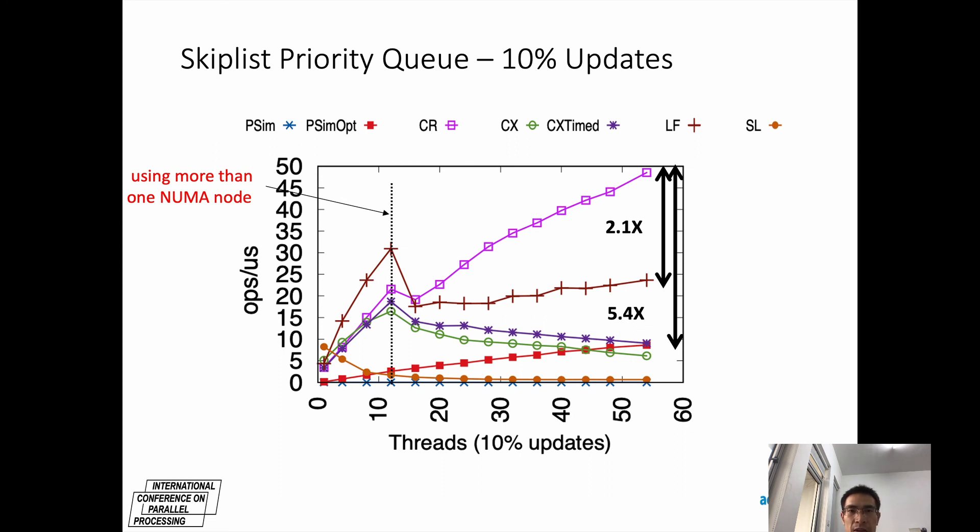For skip-list priority queue with 10% updates, the vertical line indicates using more than 1 NUMA node. When beyond one NUMA node, our method CR is significantly better than other methods. At max threads, CR is 2.1 times better than the lock-free method and 5.4 times better than the state-of-the-art universal constructor CX10. This demonstrates our benefit of efficient reads and NUMA-aware writes.